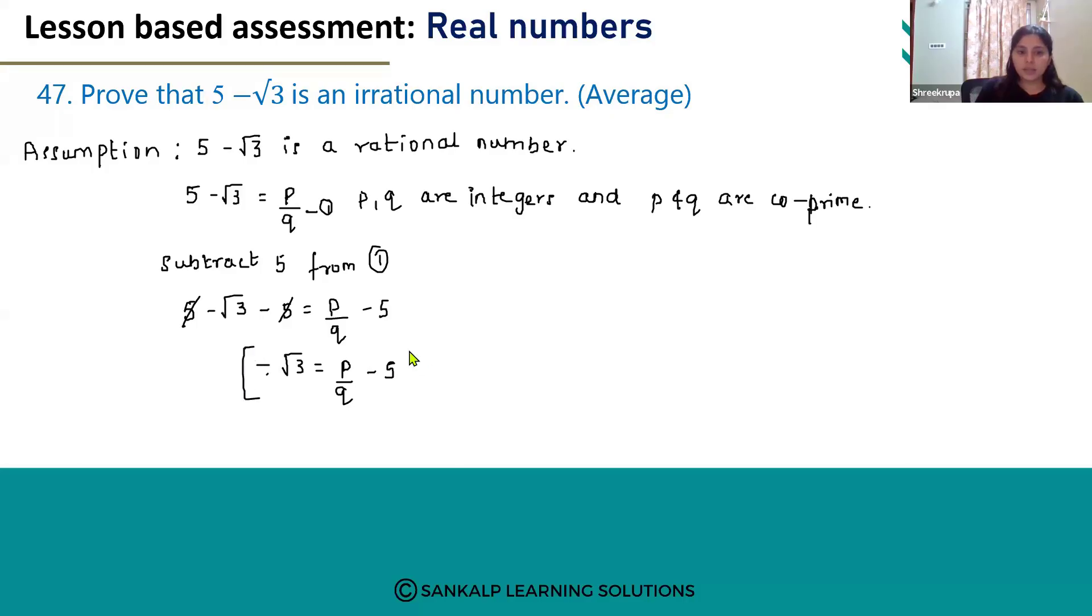I will multiply this whole equation by another minus sign. This too will get multiplied. Minus into minus will become plus. Plus root 3 is equal to...